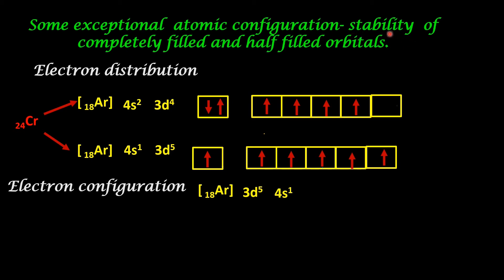Atoms attain stability when their valence shells are either completely filled or half filled. Electrons within the square bracket are called core electrons. Electrons represented outside the square bracket are called valence electrons and the orbitals are called valence orbitals.